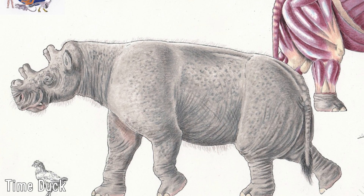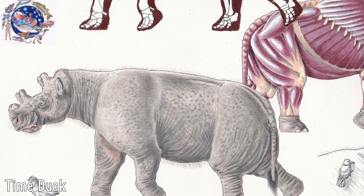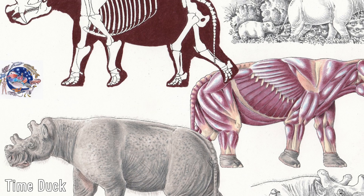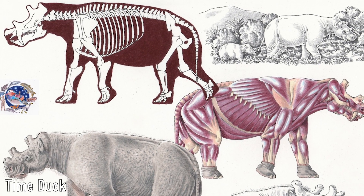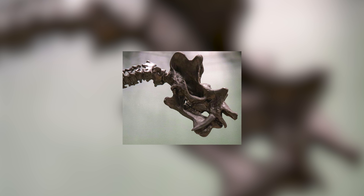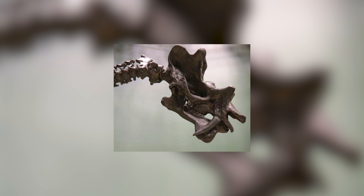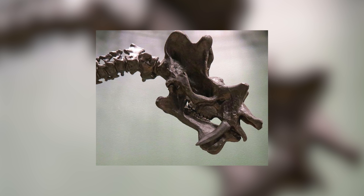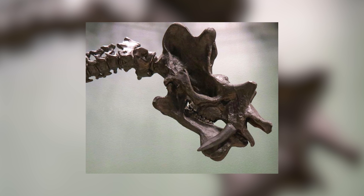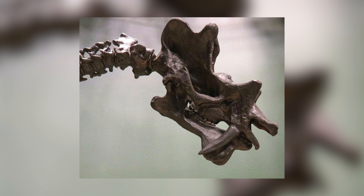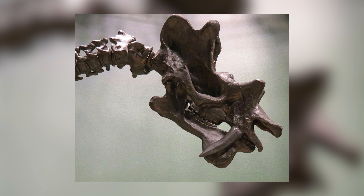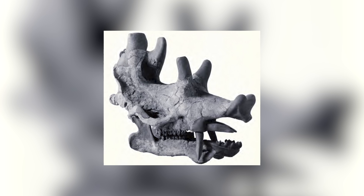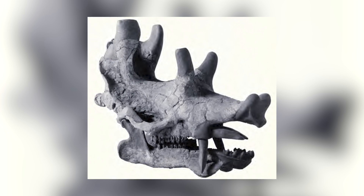Getting into the animals themselves, Uintatherium were quite large animals, having skulls of about 76cm in length and being about 1.5 meters tall at the shoulder, weighing up to 2 tons — similar in size to modern rhinos. Their skulls are weirdly flat in most dimensions, with their foreheads having a concave dip, creating a very small brain case for their size. Compared to living mammals, this is unseen aside from the brontotheres, which would also appear around the same time Uintatherium was alive.